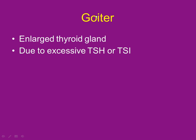Why would the thyroid enlarge if it's hypothyroid? Think of a factory making cars — if you have all the raw materials but can't get tires, the cars never leave, the warehouse fills up, and the warehouse has to get bigger to store all those parts. Same thing: the thyroid keeps building up precursors until it gets the iodine it needs to finish making thyroid hormone.